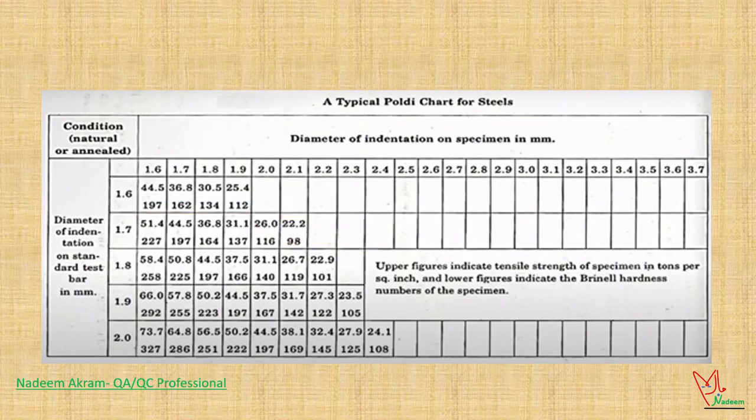If obtained average indentation diameter of standard bar is 1.9 millimeters and average diameter of specimen is 2 millimeters, then Brinell hardness will be 167 HBC.